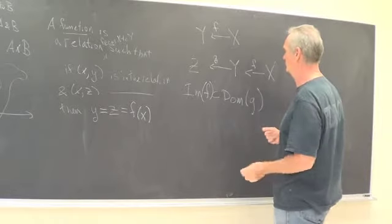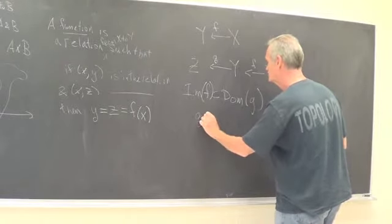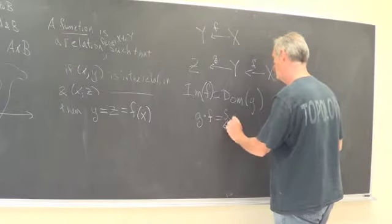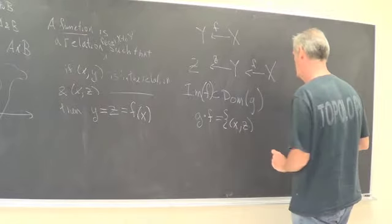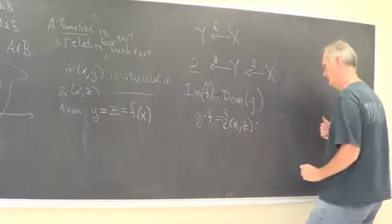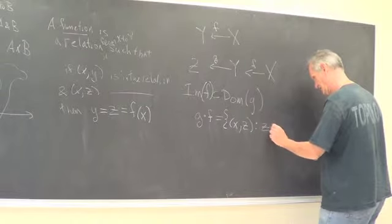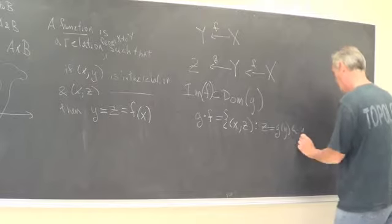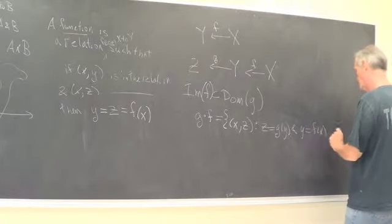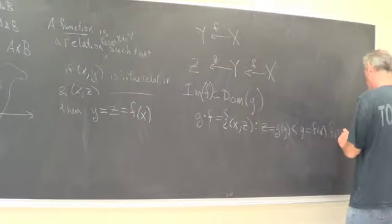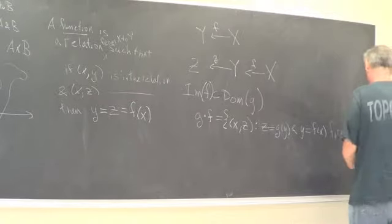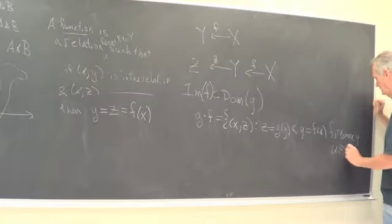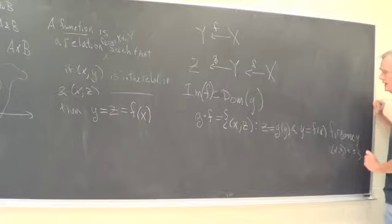And then we can form the composition G circle F and G circle F will be the set of all X, Z such that Z is equal to G of Y and Y is equal to F of X. For some Y in the, where X, Y is in the relation for the function F.